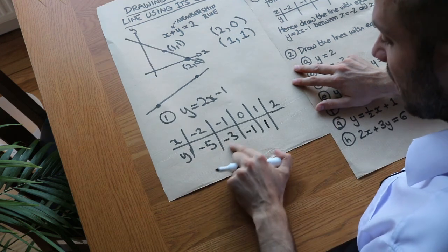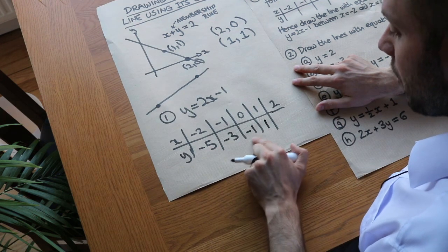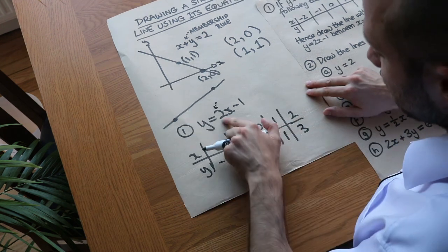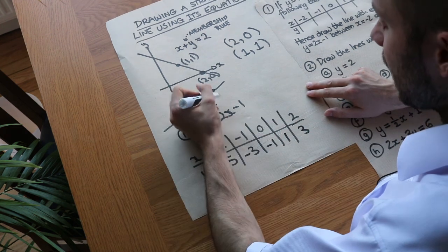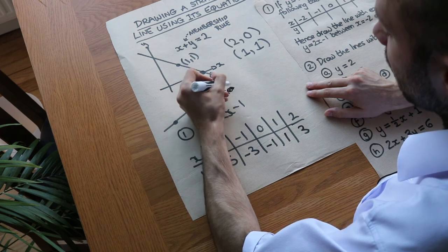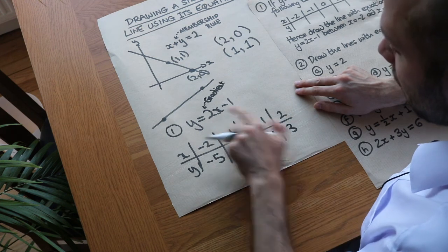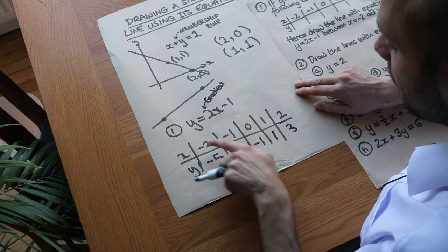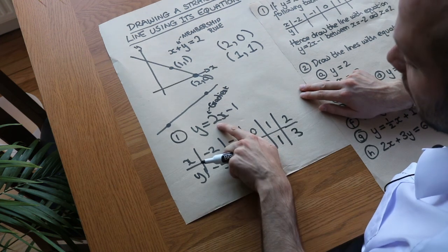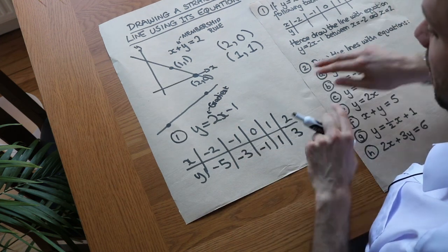You can see there's a pattern here — the y value is going up by 2 each time. That's expected because the number in front of the x is known as the gradient. The gradient tells us that each time x goes up by 1, the y value changes by 2. And you can see indeed it's changing by 2 each time.